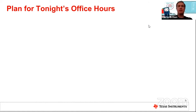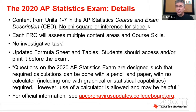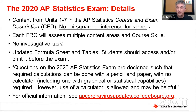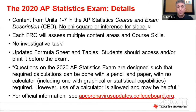The College Board website and AP Classroom are where students can find the updated formula sheet. In AP Classroom, there's a tab on the left that says course resources where they can also find the tables and formulas. Darren confirmed that the formula sheet and tables are available from the College Board website mentioned.